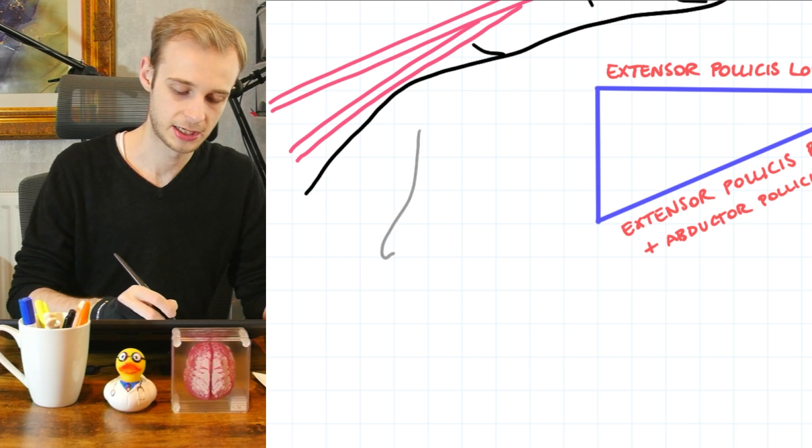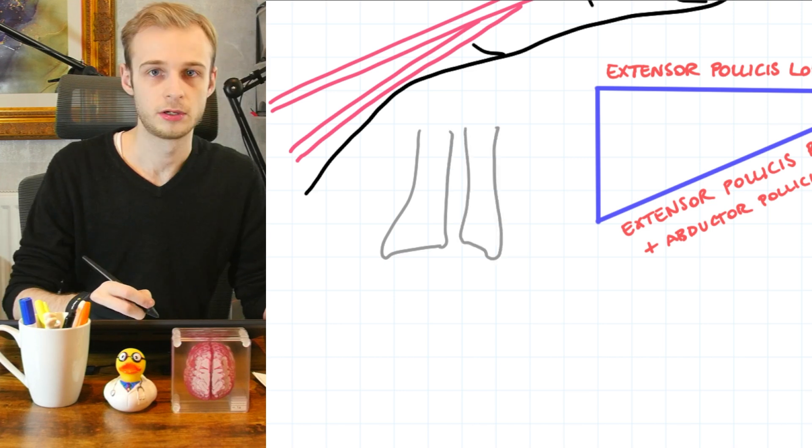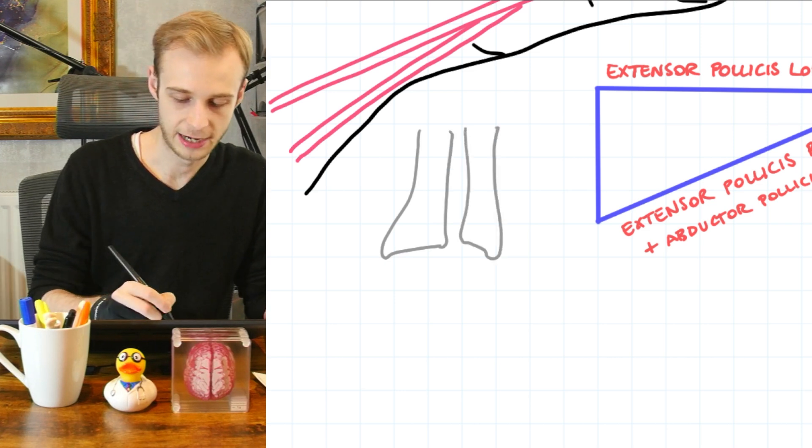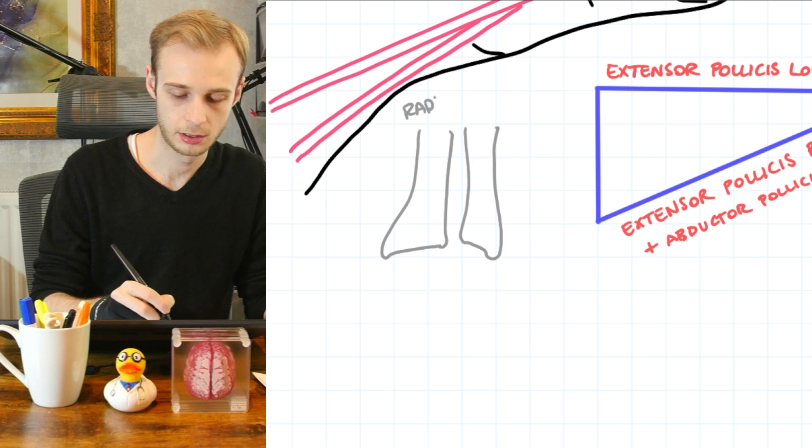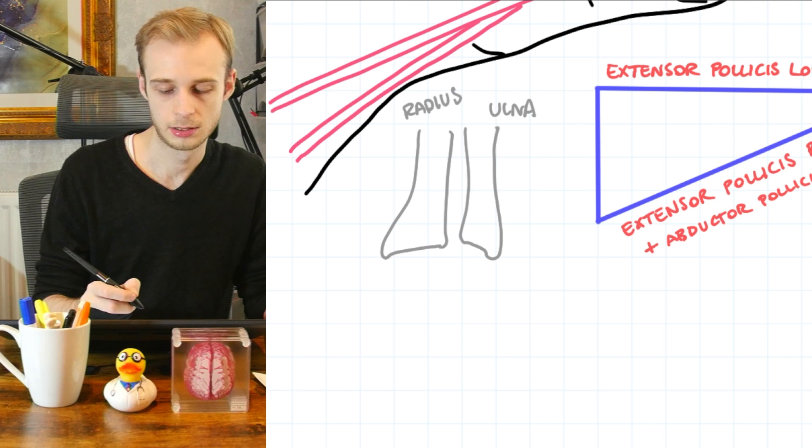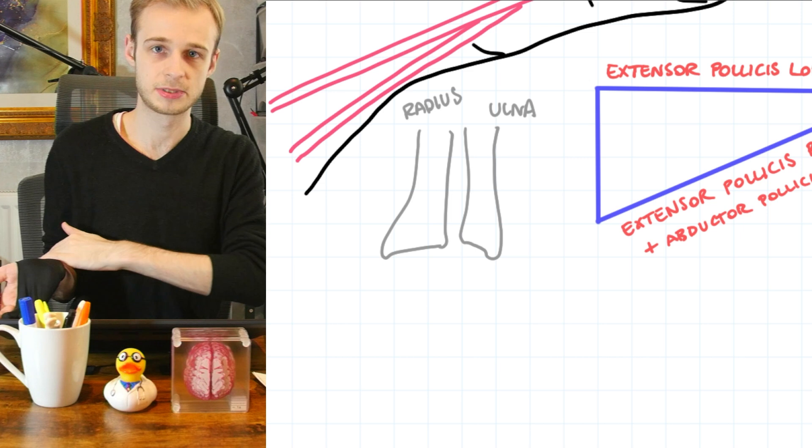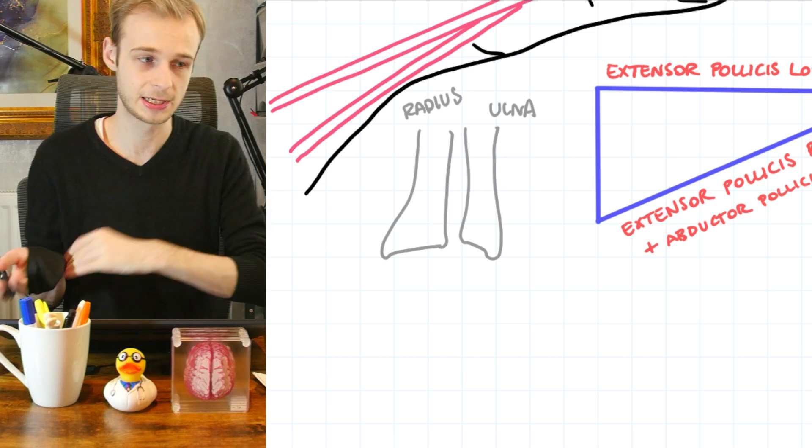And we're just going to cast our minds back a second to the wrist joint. Remembering that as our arm comes down, we have a radius on the outside and an ulna on the inside. Remembering in the anatomical position, so the radius comes down on the outside and the ulna on the inside.